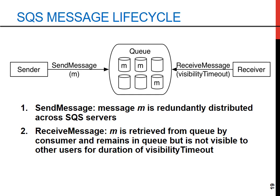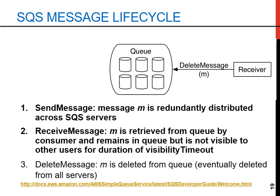The final step in the SQS lifecycle is deleting the message after processing. Once the message has been successfully processed, the consumer issues a Delete Message command, which removes the message from the queue and eventually deletes it from all servers, ensuring it won't be re-delivered. This lifecycle — sending, receiving with visibility control, and deleting — ensures messages are processed reliably and only once.